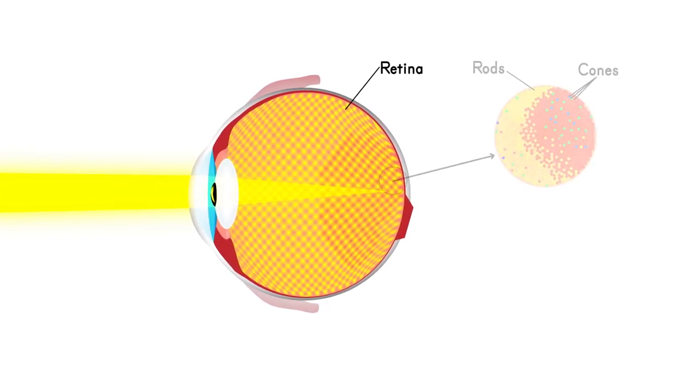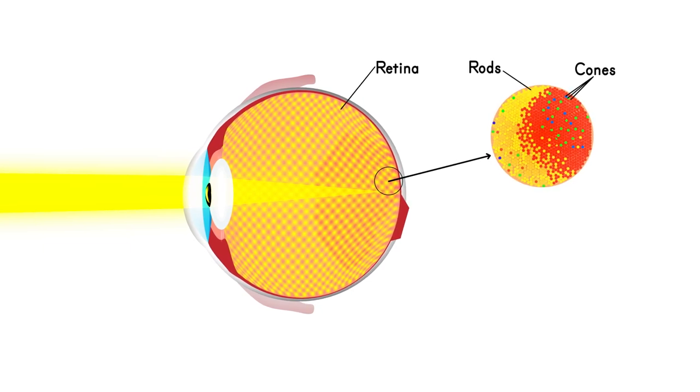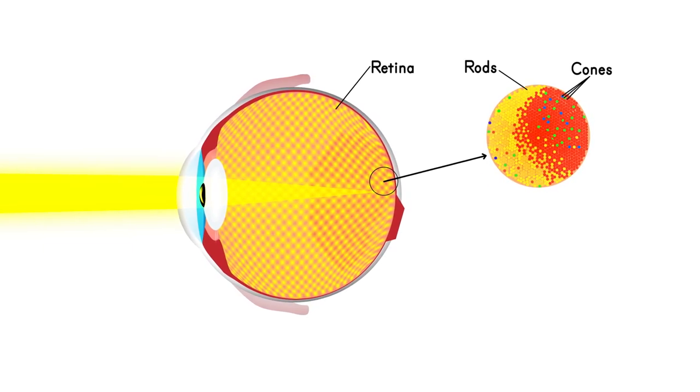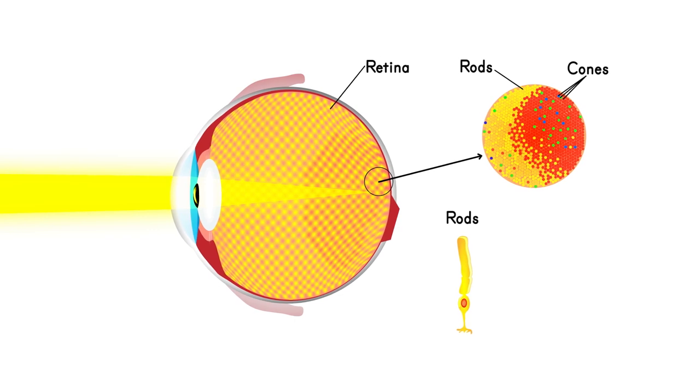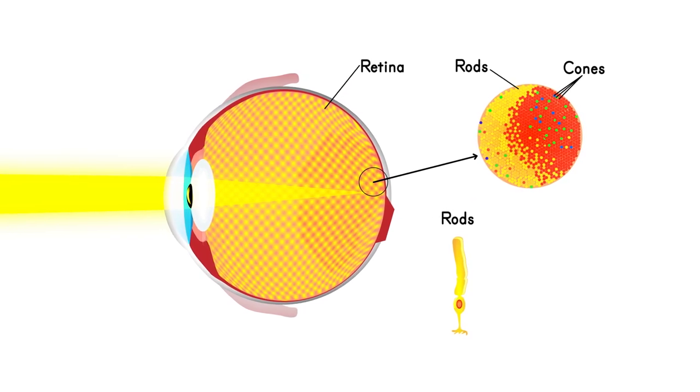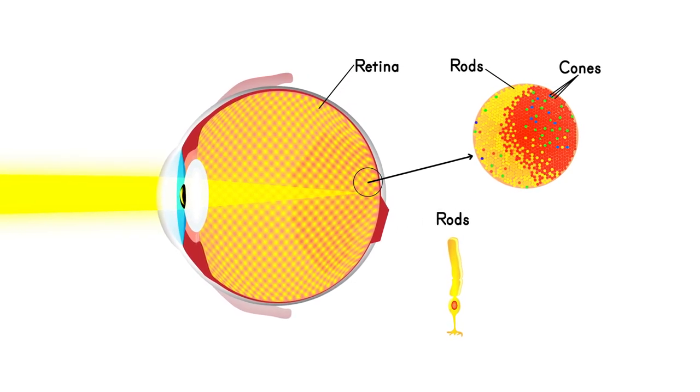There are two types of photoreceptors, rods and cones. Rods are responsible for helping you see in low light, but they do not help you see in color.